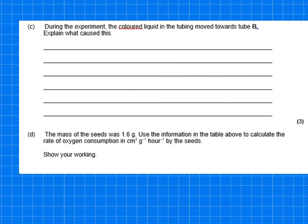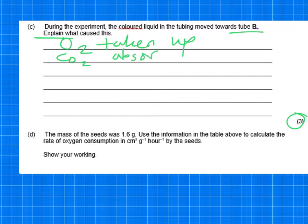So C, and it says during the experiment, the coloured liquid in the tubing moved towards tube B. Explain again exactly the same question as the previous question in the fact that O2 is taken up. So this comes up time and time again. Oxygen is taken up. CO2 is given out and it's absorbed by the KOH. And therefore, the volume or pressure decreases.